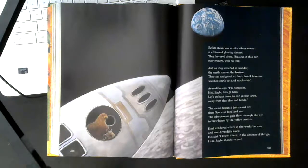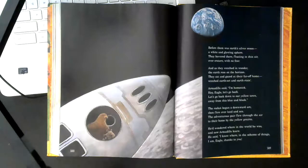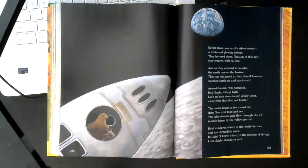Armadillo said, I'm homesick. Hey, eagle, let's go back. Let's go back down to our yellow town, away from all this blue and black. The rocket began a downward arc, then flew over land and sea. The adventurous pair flew through the air, to their home by the yellow prairie.